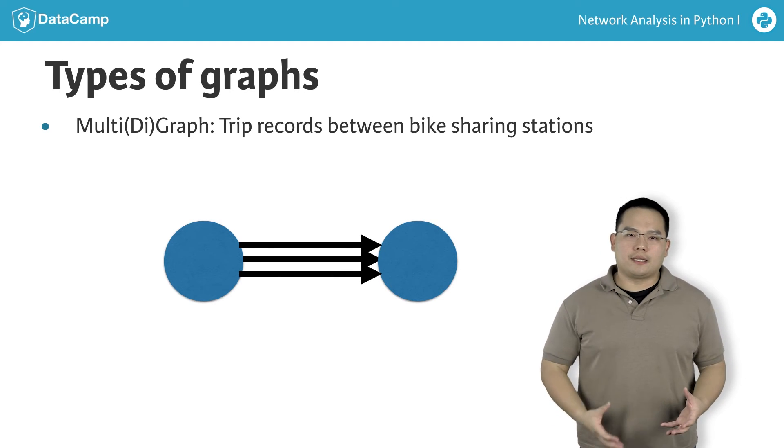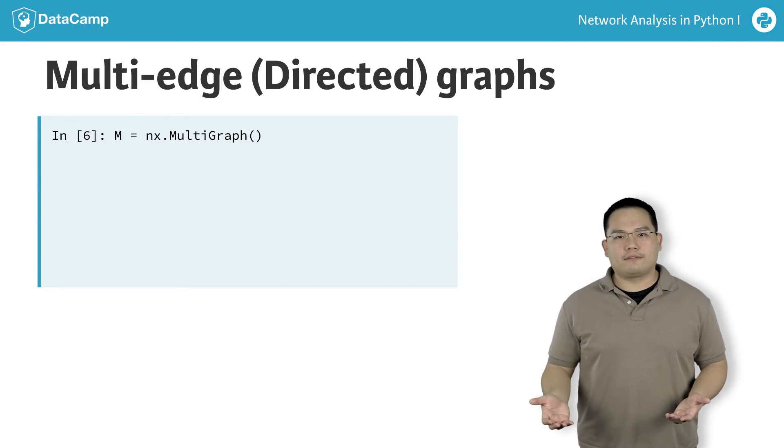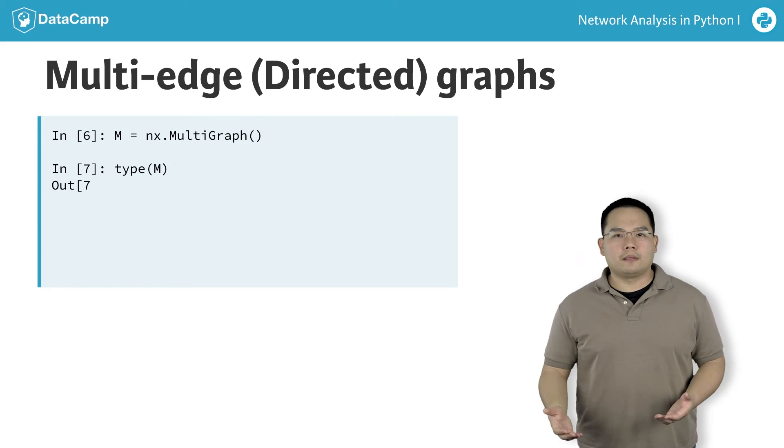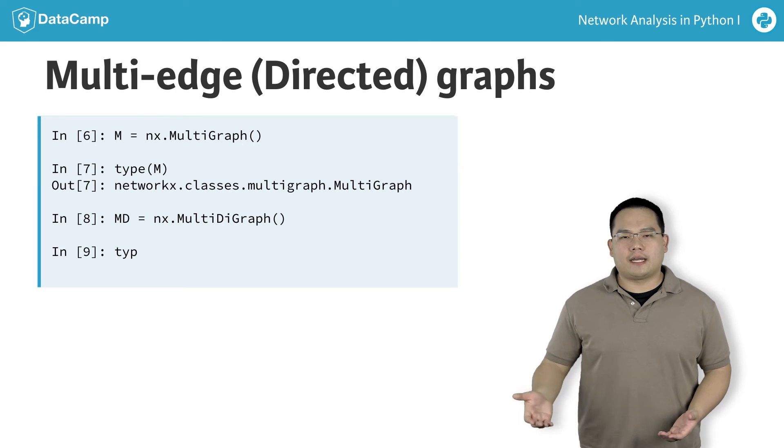If we explore this in the IPython terminal, we can likewise instantiate a multi-graph using nx.multigraph. If we check for its type, it will be of the multigraph class, and likewise for the multi-digraph object.